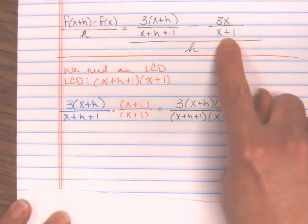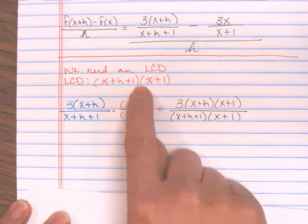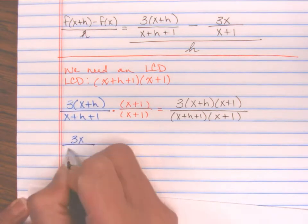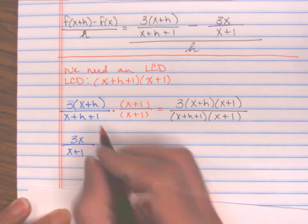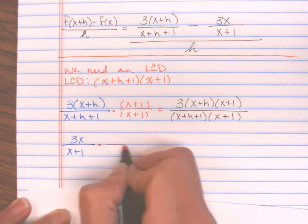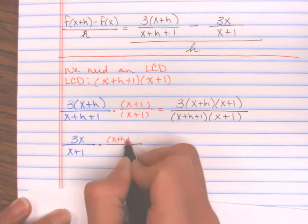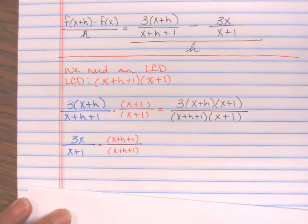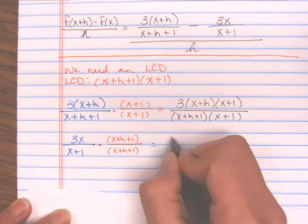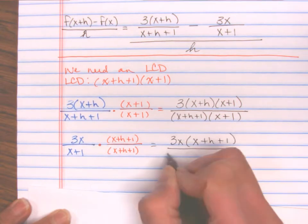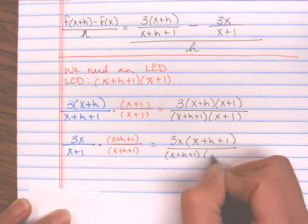I still need to take the second term, 3x divided by (x+1), and give it the LCD as well. I multiply by what's missing, which is (x+h+1). So now I have 3x(x+h+1) all divided by (x+h+1)(x+1).